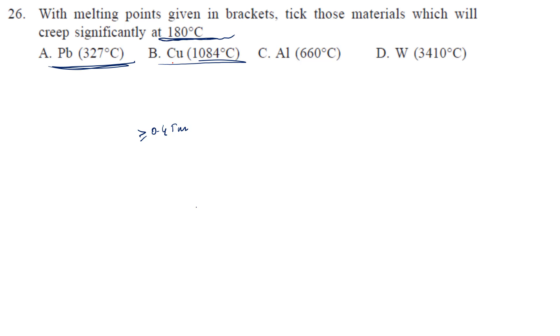If you see copper, it has 1084. 180 degrees centigrade is very low for copper. Let's check: 0.4 of 1084 plus 273 is 542.4 Kelvin. In degrees centigrade, it's 269. So for option B, it will not creep.